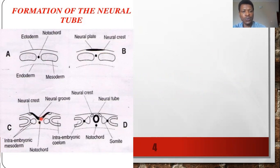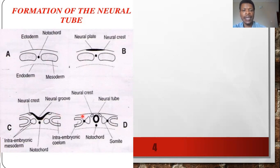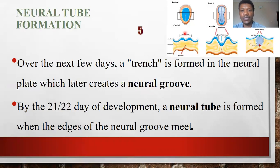The notochord induces thickening of the ectodermal layer such that cells proliferate and become thick. Because the center, which is directly overlying the notochord, thickens further and there are so many cells, it deepens, forming a groove, and later on it forms a fold. The two lateral ends would meet and form a tube.